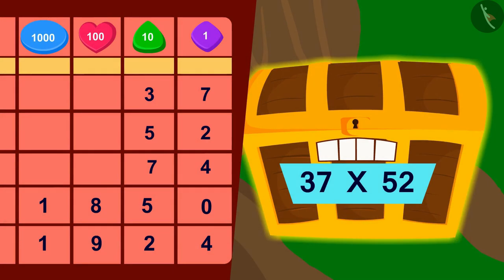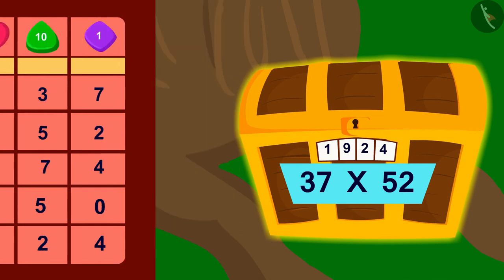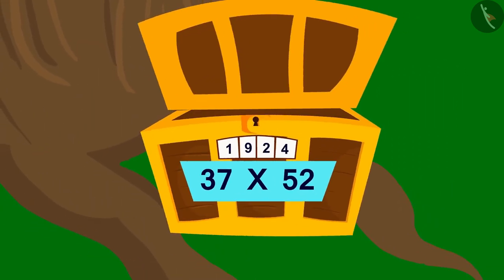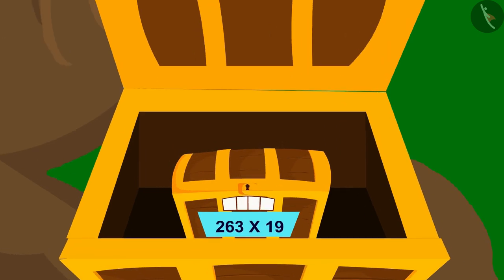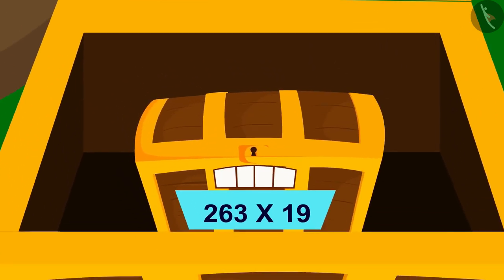Bhola quickly entered 1924 in the lock's code and the lock opened. But, what is this? There is another box inside this box. And, this box too has a four-digit lock just like the first box.